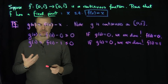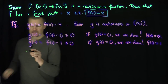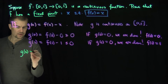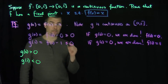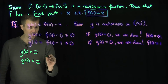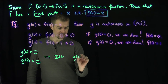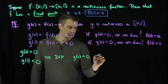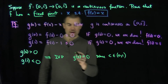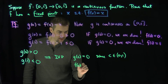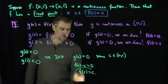So if g of zero or g of one equals zero, we're done. The final case is that g of zero is strictly greater than zero and g of one is strictly less than zero. If both those things are true simultaneously, the intermediate value property tells us that g of c equals zero for some c in the open interval zero one. For that value, f of c minus c equals zero, so f of c equals c — that is our fixed point.